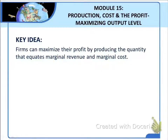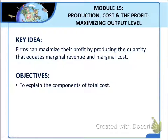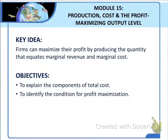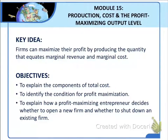The key idea in this module is that firms — meaning businesses — can maximize their profit by producing the quantity that equates marginal revenue and marginal cost. Businesses want to produce the maximum amount of profit, and we will find that is where marginal revenue is equal to marginal cost. For the objectives: first, I will explain the components of total cost; then identify the condition for profit maximization; and finally, explain how a profit-maximizing entrepreneur decides whether to open a new firm or shut down an existing firm.